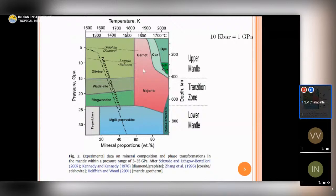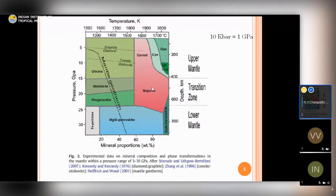Garnet converts to a very high-pressure form called majorite, where silicon exists in both tetrahedral and octahedral coordination — unique to majorite. These phase transitions can be studied through high-pressure experiments, but also by finding these minerals as inclusions in natural materials such as diamonds, which we will discuss.